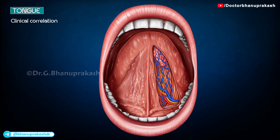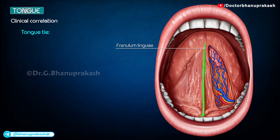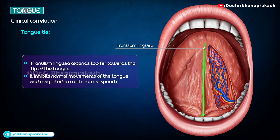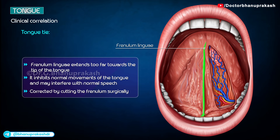Clinical correlation — Tongue tie: If the frenulum extends too far towards the tip of the tongue, it is called tongue tie. This inhibits normal movements of the tongue and may interfere with normal speech. It can be corrected by cutting the frenulum surgically.